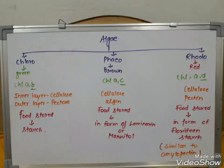The three classes of algae are Chlorophyceae, Rhodophyceae, and Phaeophyceae. Chloro means green, Phaeo means brown, and Rhodo means red. Chlorophyceae is type AB, Phaeophyceae is type AC, and Rhodophyceae is type AD — so A is common to all, with B, C, and D distinguishing each class.